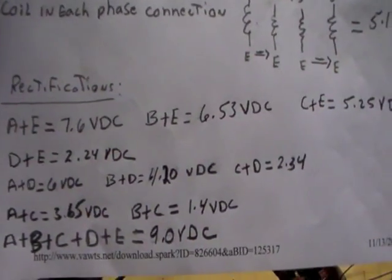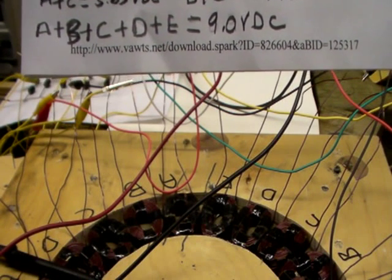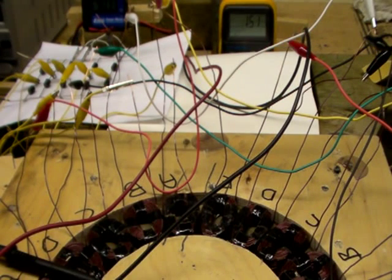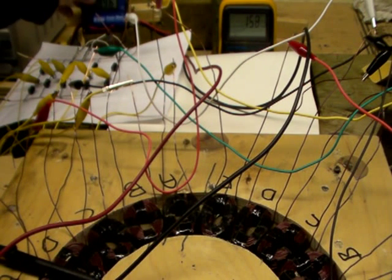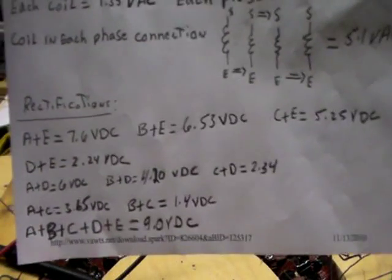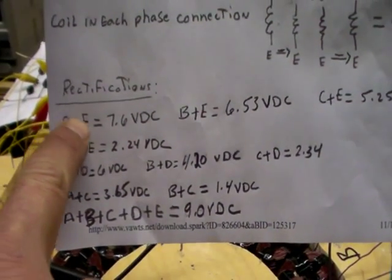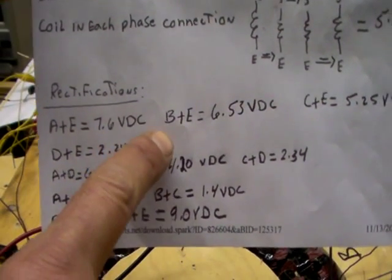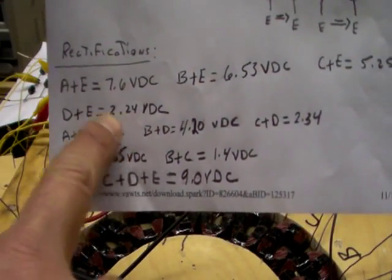Now the rectifications. In total, A plus B plus C plus D plus E is giving me 9 volts. And that's what this gauge is reading. I hope you can see it because I'm not going to do this again. I know you guys will be interested to see what this gibberish is. Well, I rectified A plus E and that gives me the most voltage. And then B and E gives me less and less. So it gradually goes down.